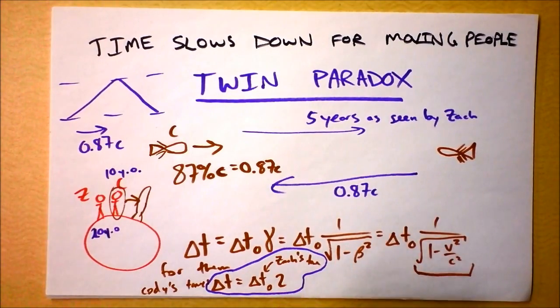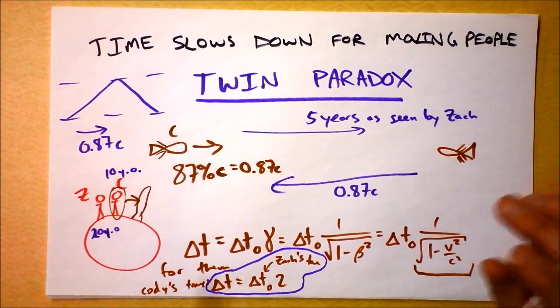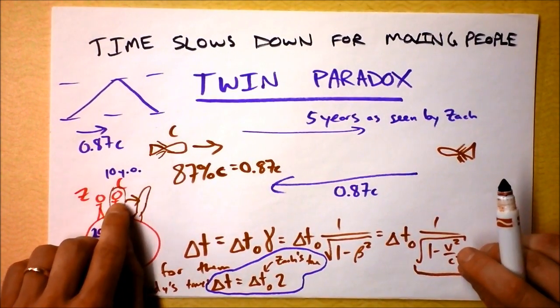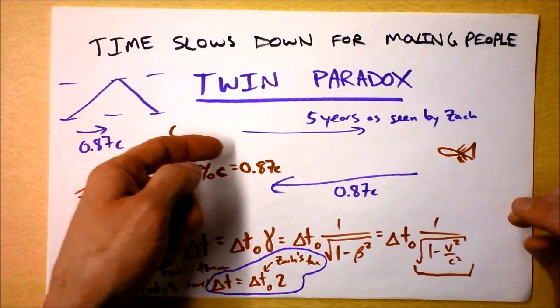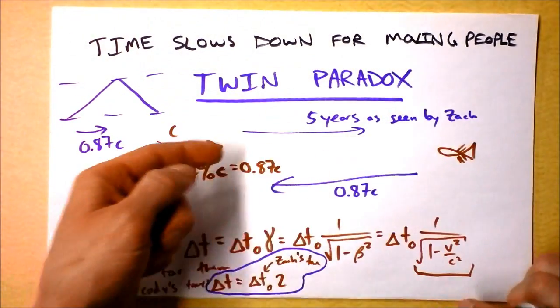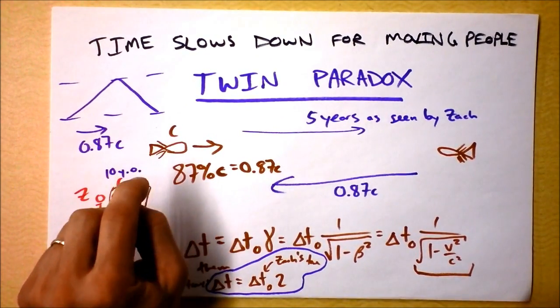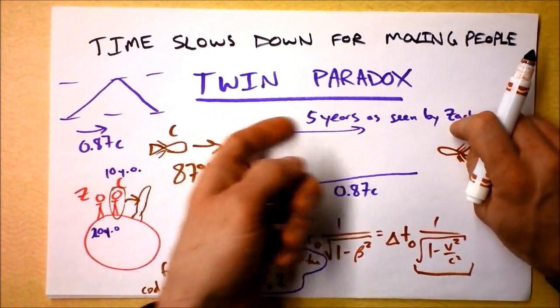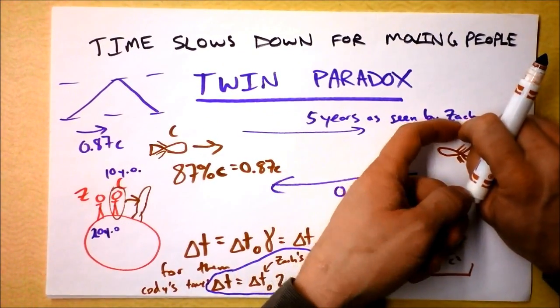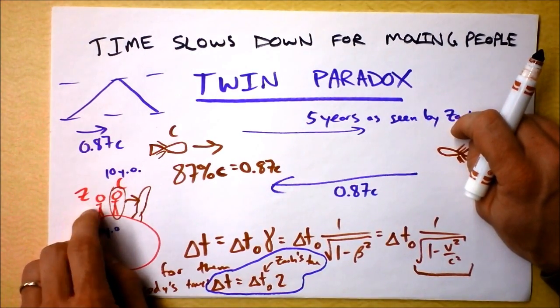Now, Cody was going 87% the speed of light. And then he turned around and he went 87% the speed of light. But I want you to think about where the paradox is here. Are you ready for the paradox? Are you ready for the paradox? Okay. Here's the paradox. The paradox is, Cody thinks that Zack is going that direction while Cody is going this direction. Cody thinks he's at rest. Right? And he thinks Zack's going that way.